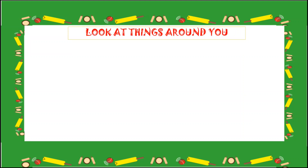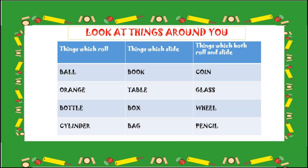Dear children, look at things around you. Here are some examples. Things which can roll: Ball, Orange, Bottle, Cylinder. Things which can slide: Book, Table, Box, Bag. Things which can both roll and slide: Coin, Glass, Wheel, and Pencil.